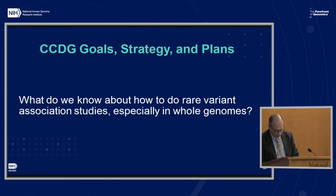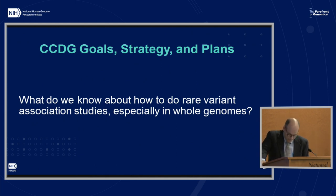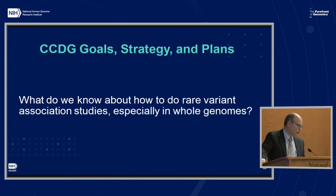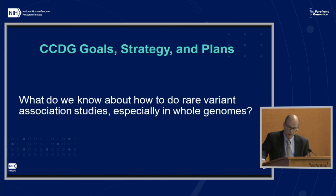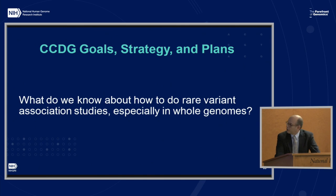I want to return to something I said at the beginning: for Mendelian, we know what we're doing — not that there isn't a lot more to do. But for common disease, we don't. I still think we're quite near the beginning. The CCDGs have been working on a goals, strategy, and plan document. The strategy part has gotten quite exhaustive, but I think it can be summarized as a statement of the state of the art. Some of those are reflected on the next slide, taken directly from the discussion about strategy at the meeting.